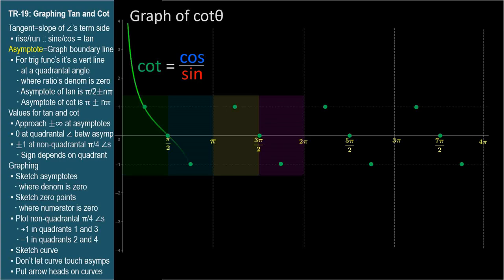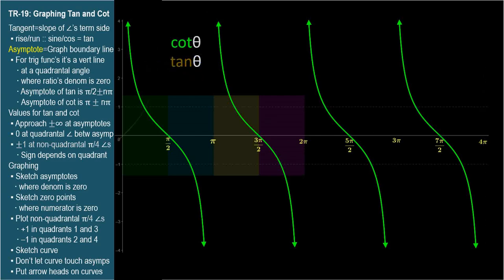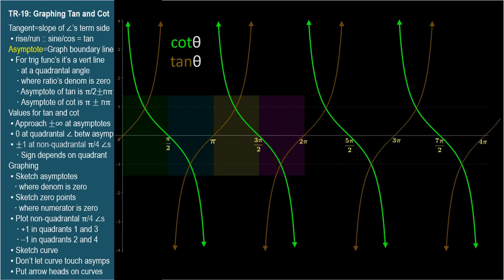Here's what cotangent looks like. And here are tangent and cotangent together. Since tangent and cotangent are reciprocals, they're positive and negative in the same quadrants. And since they're reciprocals, cotangent will be one wherever tangent is one, and negative one where tangent is negative one. Also, the angle where one crosses the x-axis is an asymptote for the other. It's interesting how they flow in opposite directions — ascending for tangent, descending for cotangent — but are positive and negative in the same quadrant.